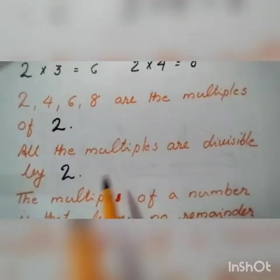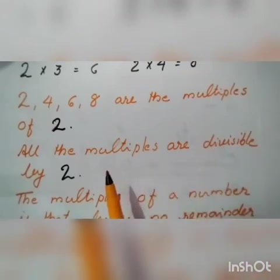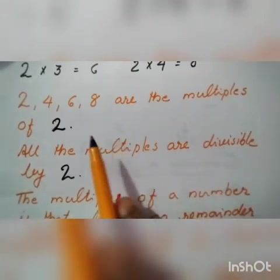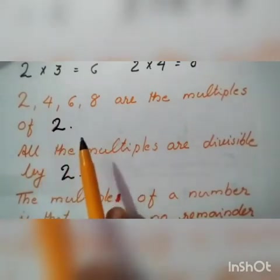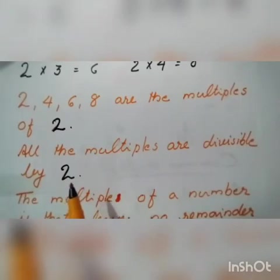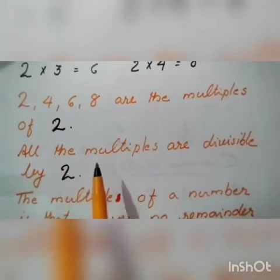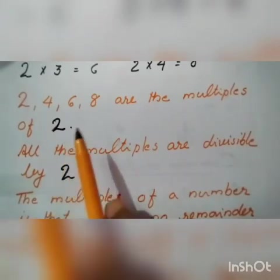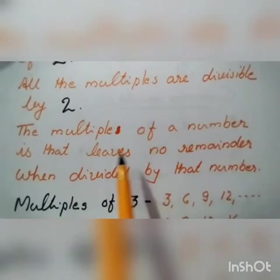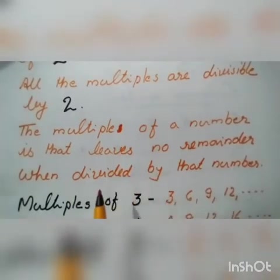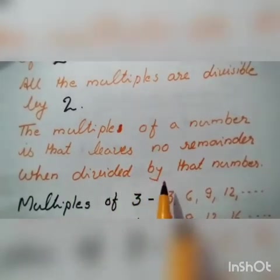All the multiples are divisible by two. That is, two divided by two, four divided by two, six divided by two, eight divided by two — there is no remainder. The multiple of a number is that which leaves no remainder when divided by that number.